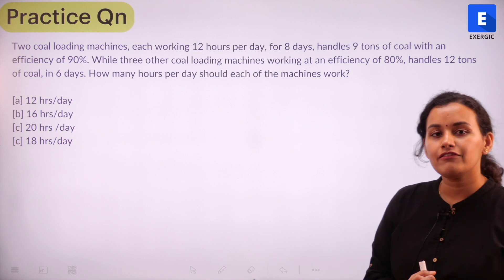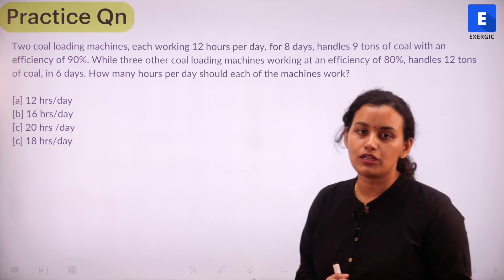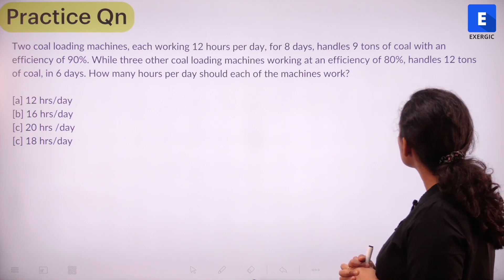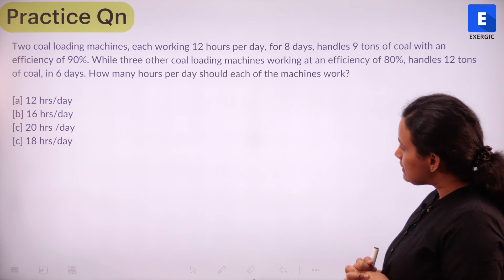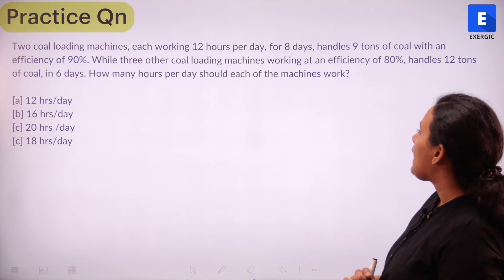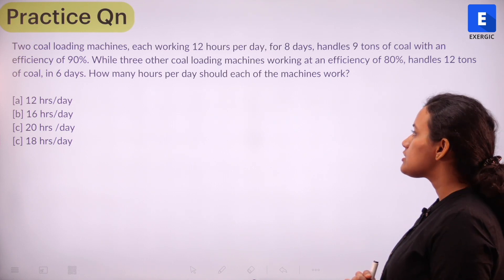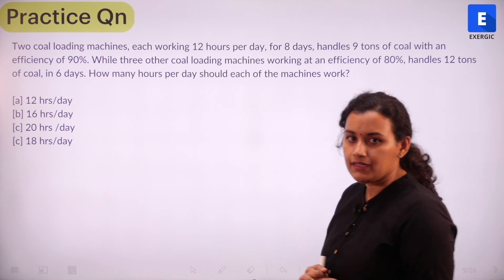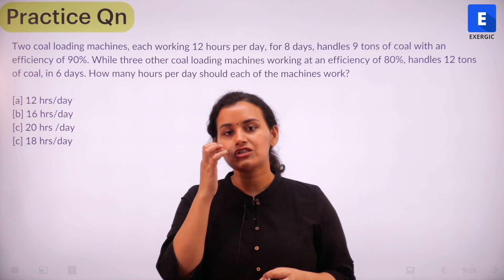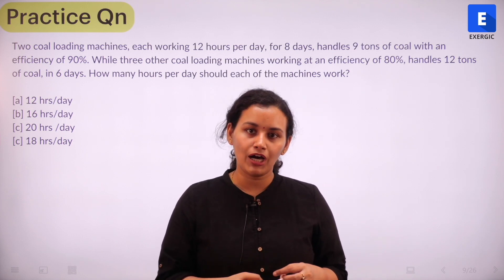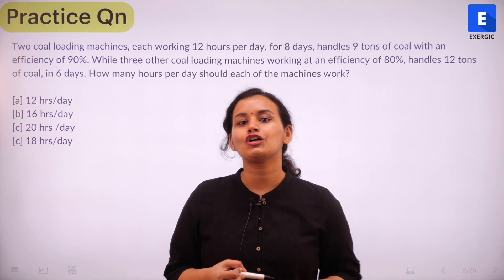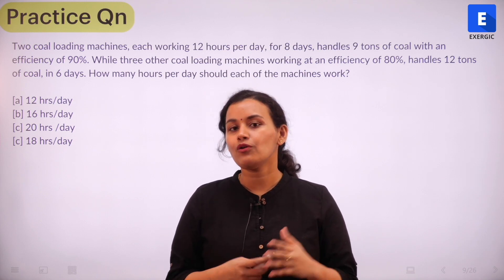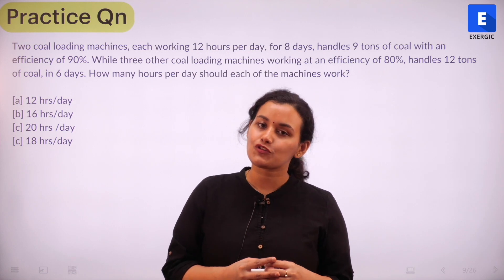Here is the practice question for you — again, a very simple, basic question dealing with fundamental concepts of time and work. Two coal loading machines, each working 12 hours per day for 8 days, handle 9 tons of coal with an efficiency of 90%. Three other coal loading machines working at 80% efficiency handle 12 tons of coal in 6 days. How many hours per day should each of the 12 machines work? Options: 12, 16, 20, or 18 hours per day. Give it a good try and leave your answers in the comment section below. If you have any doubts, feel free to ask and I will get back to you. I hope you found this video helpful. Thank you so much for watching. All the best.